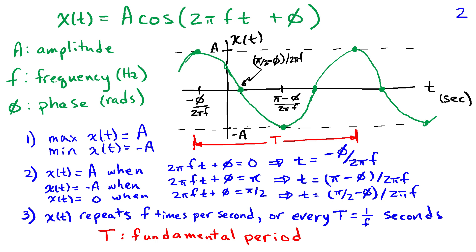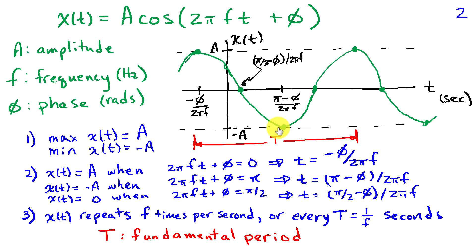Sinusoids repeat: x(t) repeats f times per second, so we get one cycle every T = 1/f seconds. We call T the fundamental period. T is also twice the distance from the maximum to the minimum. Knowing T, we can fill in additional points on the graph and connect them in a sinusoidal fashion.